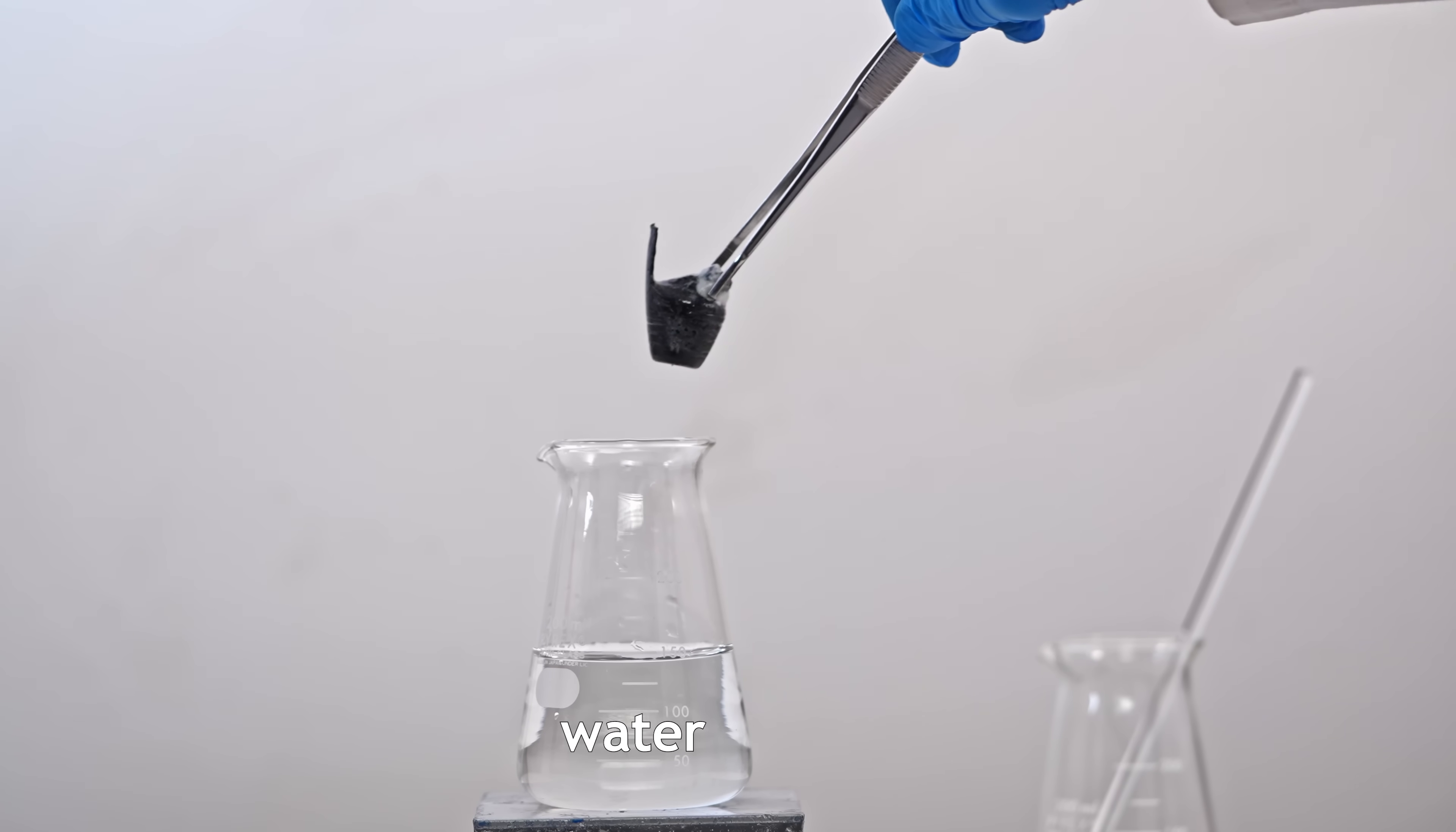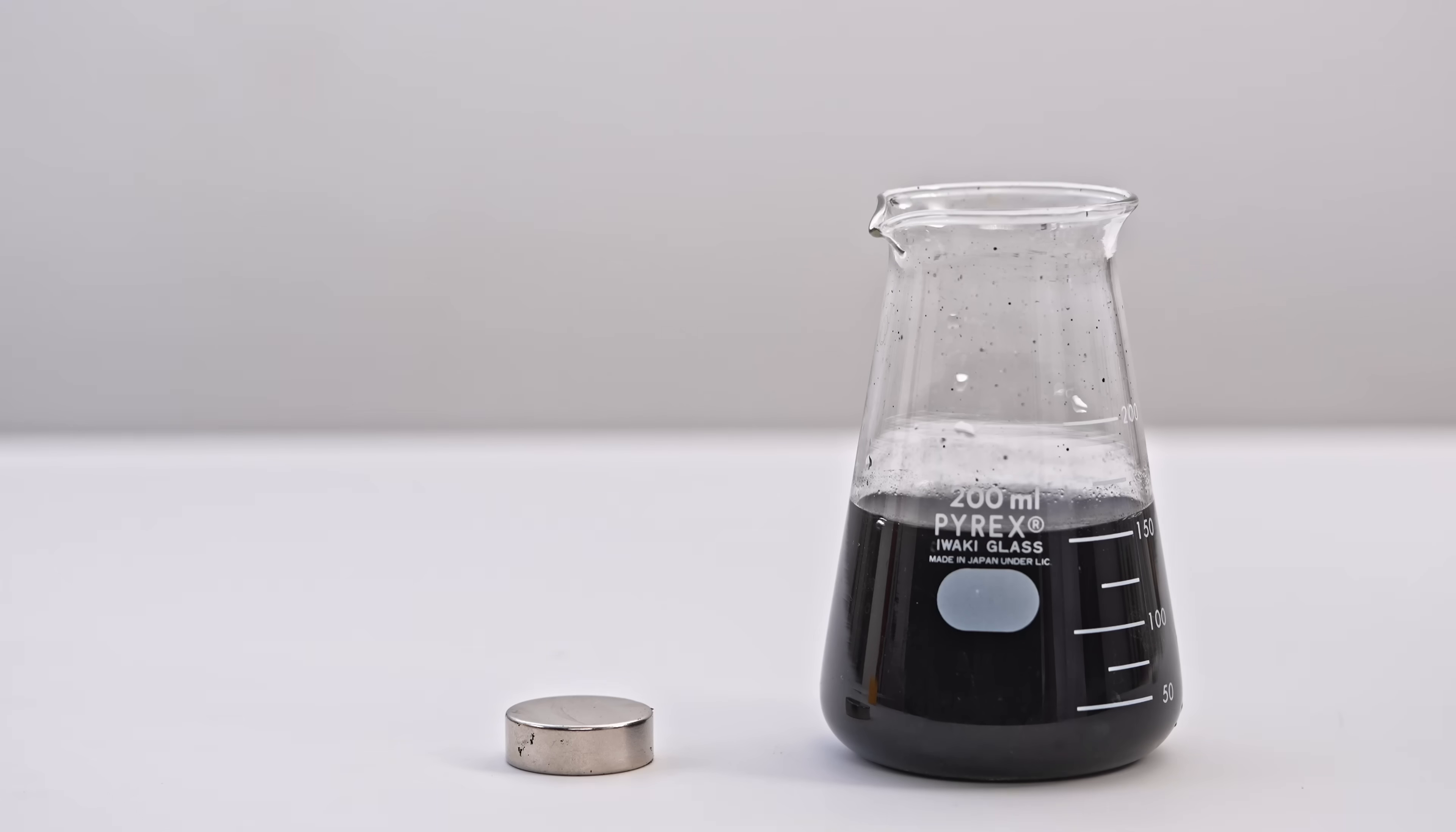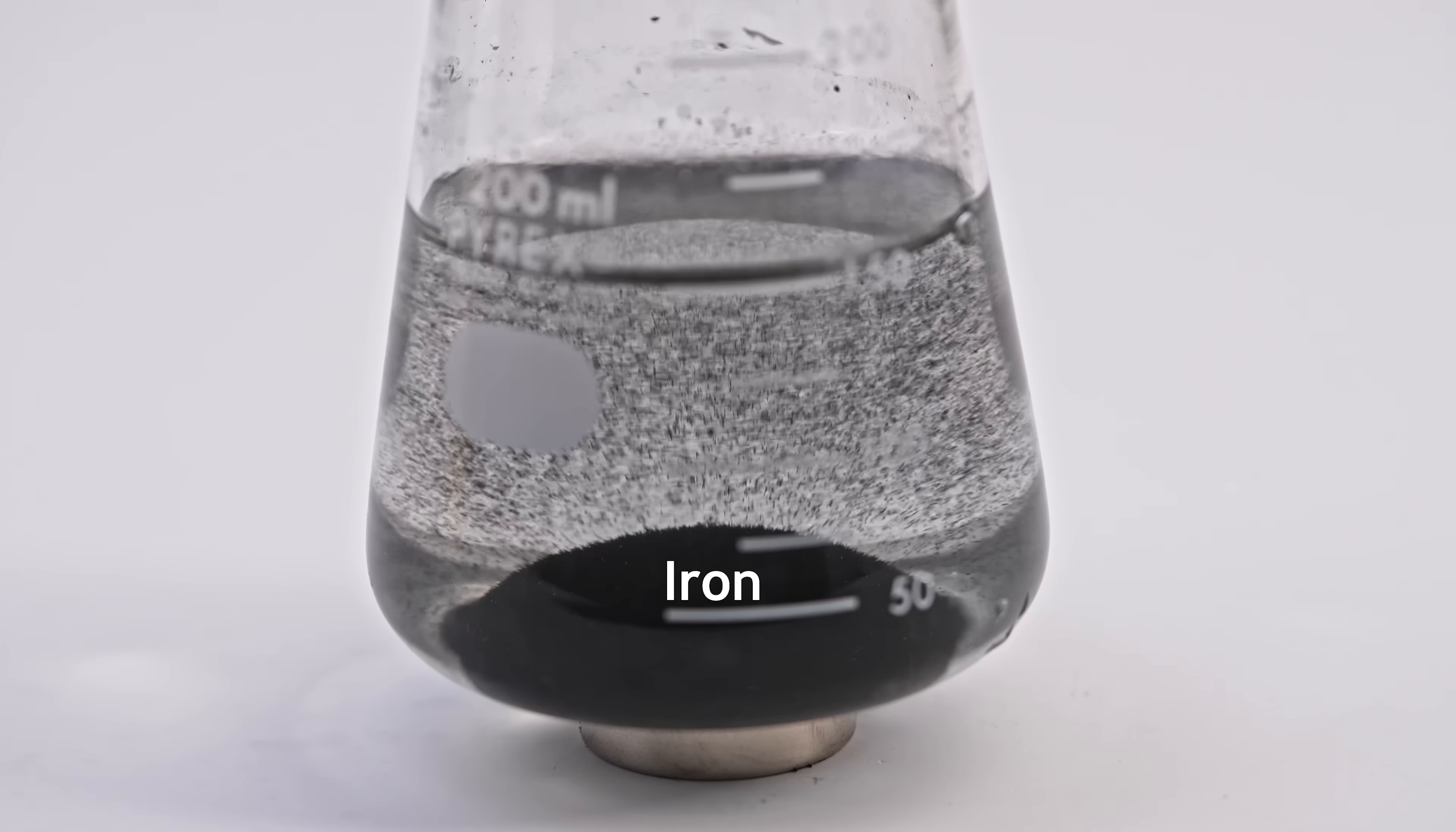I dissolve it in water to separate the insoluble iron impurities, which we can collect using a magnet. If we place it on a magnet, all the iron will quickly collect at the bottom of the beaker, which will simplify the task of filtering this solution.